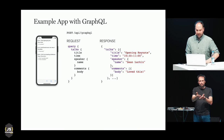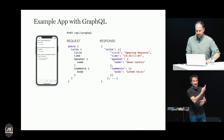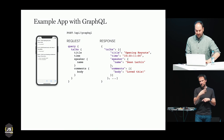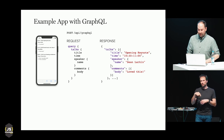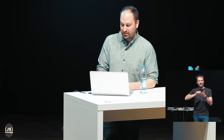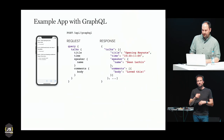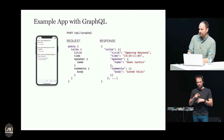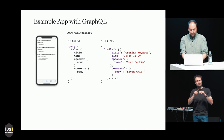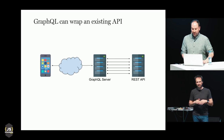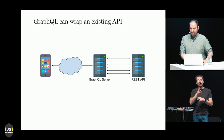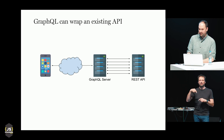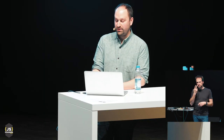In GraphQL we have just one endpoint — slash API slash GraphQL — and the client sends a request with a GraphQL query to this endpoint. A GraphQL request kind of looks like JSON with only the keys. The GraphQL server processes this request and returns actual JSON in the same shape. Since there's only one request, we don't have to write code to coordinate a waterfall of REST requests. It's also pretty common to wrap a REST API with a GraphQL server — a mostly low-cost way to start getting the benefits of GraphQL without rewriting your whole backend.